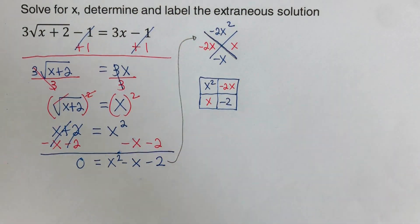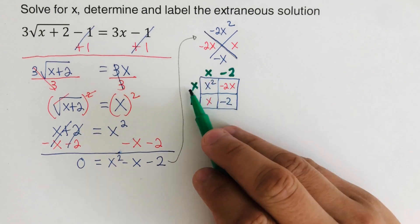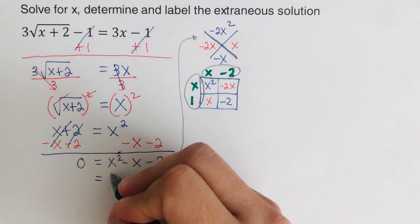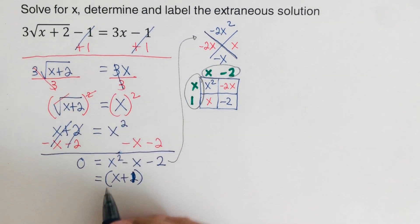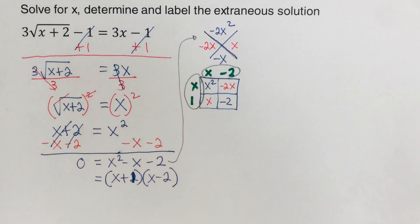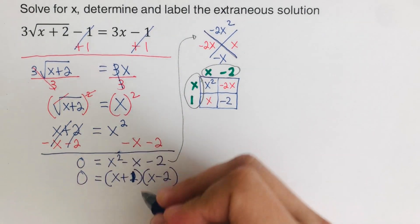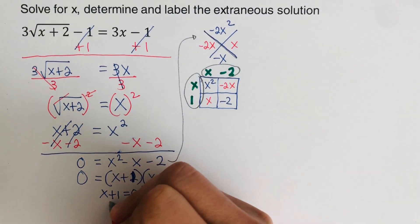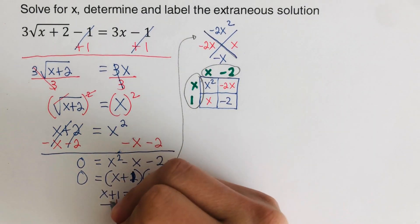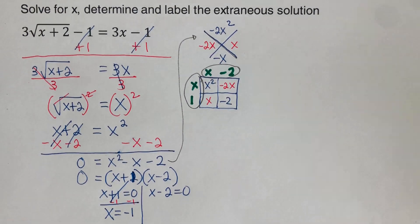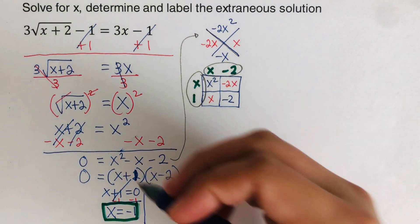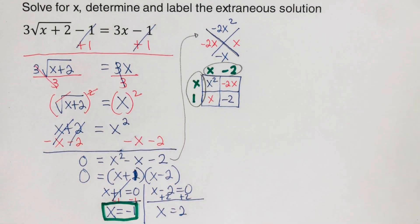We factor x squared minus x minus two using the box and diamond method, giving us the factors x plus one and x minus two, set equal to zero. Using the zero product property: x plus one equals zero gives x equals negative one (our first solution), and x minus two equals zero gives x equals two (our second solution).